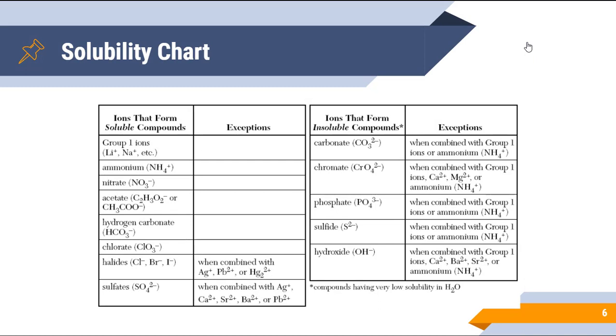Everybody will get a copy of this, but it's important to make sure that you understand the rules. If you see something that's soluble, that means that it's aqueous. If it's an exception to a soluble, then it is a solid. Things that form insoluble compounds would be solid, and the exceptions would be aqueous as well.